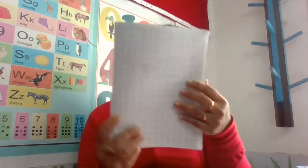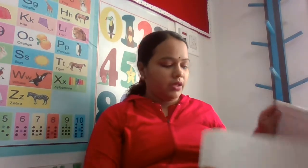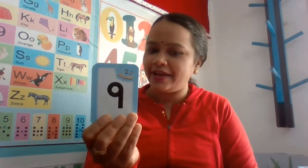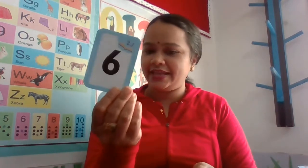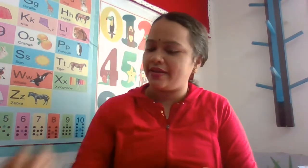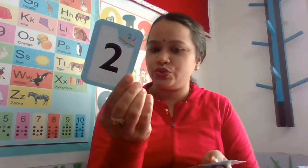Color all the circles. After this we revise the backward numbers. 10, 9, 8, 7, 6, 5, 4, 3, 2, 1. Today we revised the backward numbers from 10 to 1. You should also revise the backward numbers.